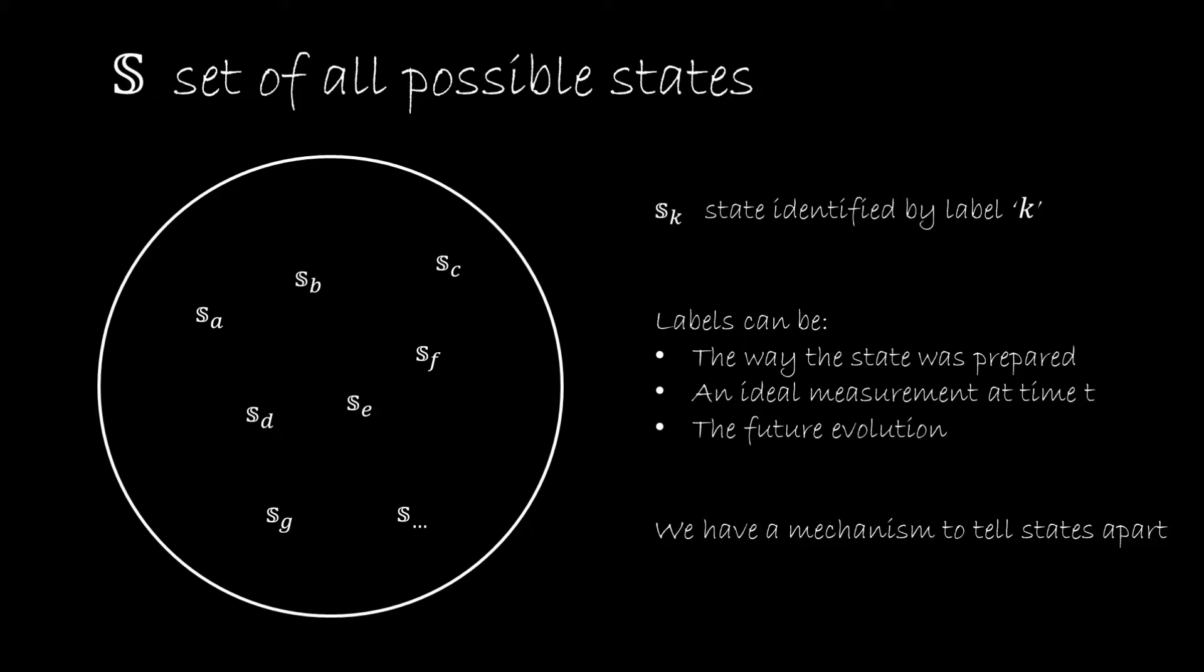And this label can be anything. In physical systems, it's going to be typically either the way the state was prepared - for example, it's the beam of photons prepared at that energy with this particular polarization. Or it can be an ideal measurement. So if we have a point particle, it's going to be the position and momentum at a particular time T, or it could also be the future evolution. It's the state that if I put it in a magnetic field, it's going to turn right.